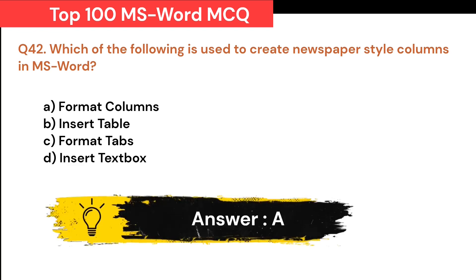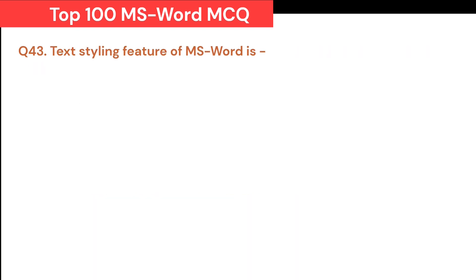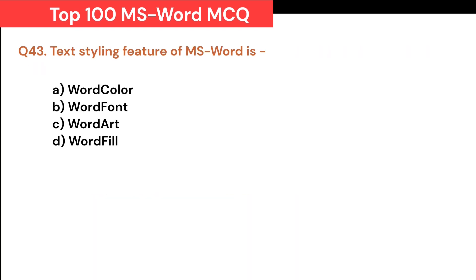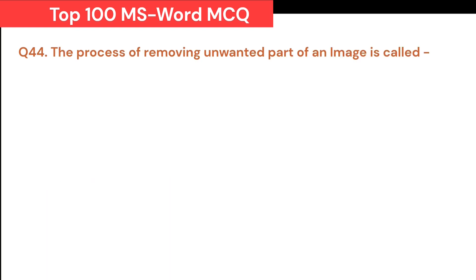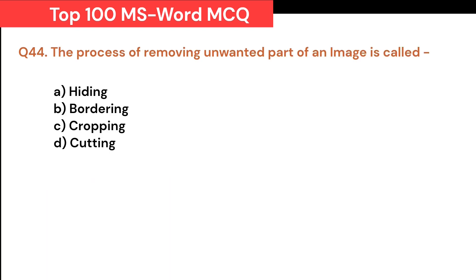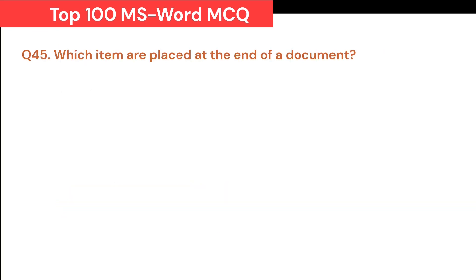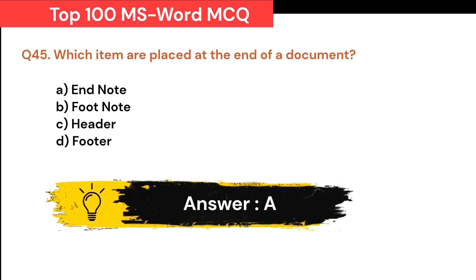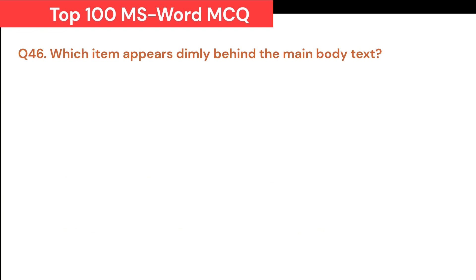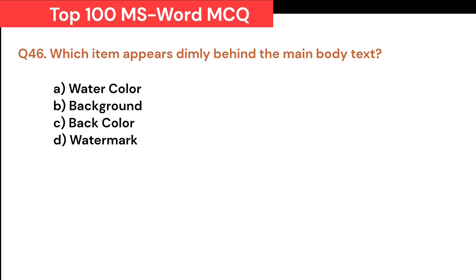The text styling feature of MS Word is: A. Word Color. B. Word Font. C. Word Art. D. Word Fill. Correct answer is C. Word Art. The process of removing an unwanted part of an image is called: A. Hiding. B. Bordering. C. Cropping. D. Cutting. Correct answer is C. Cropping. Which items are placed at the end of a document? A. End note. B. Footnote. C. Header. D. Footer. Correct answer is A. End note. Which item appears dimly behind the main body text? A. Watercolor. B. Background. C. Back color. D. Watermark. Correct answer is D. Watermark.